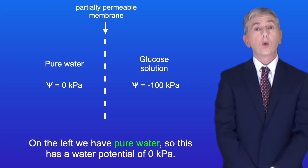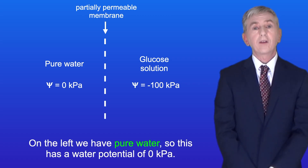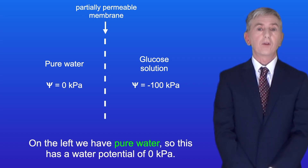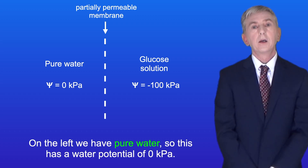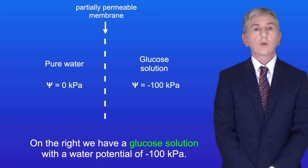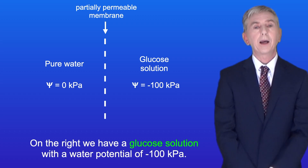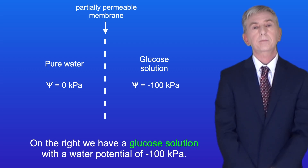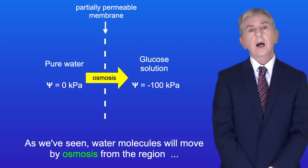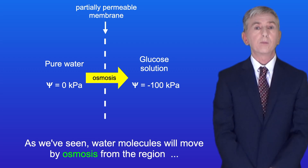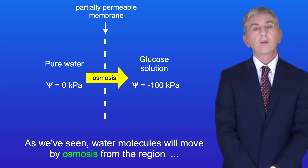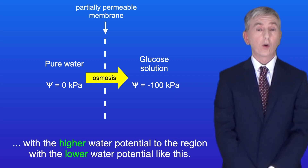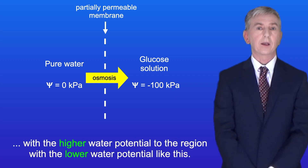On the left, we've got pure water, so this has a water potential of zero kilopascals. On the right, we have a glucose solution with a water potential of minus 100 kilopascals. As we've seen, water molecules will move by osmosis from the region with a higher water potential to the region with a lower water potential like this.